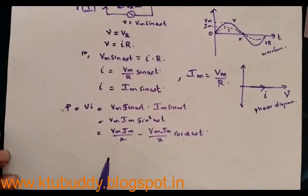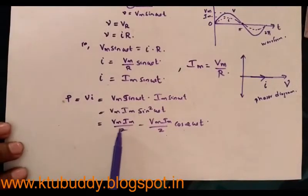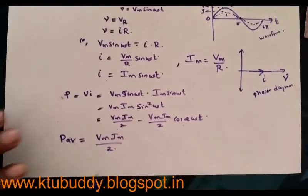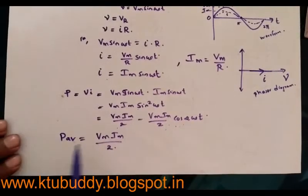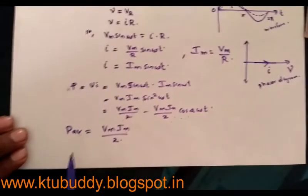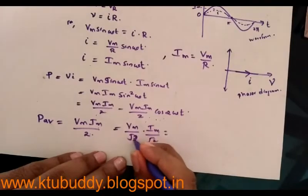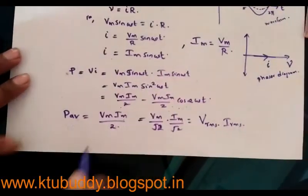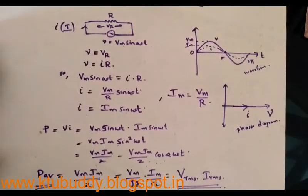By integrating the instantaneous power expression over one full cycle, we can show that the average power consumed is P_avg = Vm Im / 2, because the average value of the cosine component over one full cycle is zero. Modifying this expression: Vm Im / 2 = (Vm / √2) × (Im / √2), and since the maximum value divided by √2 gives the RMS value, the average power equals V_rms × I_rms. In a purely resistive circuit, the power consumed is the product of V_rms and I_rms. That's all about a purely resistive circuit. Thank you.